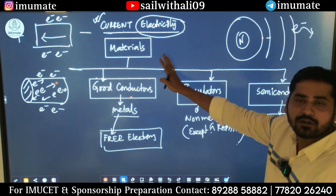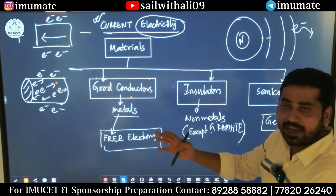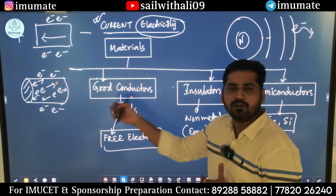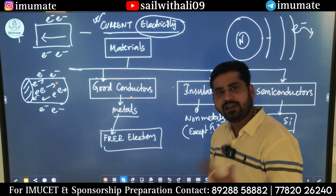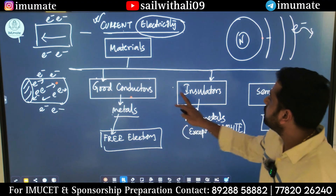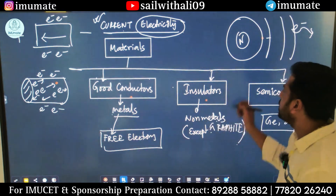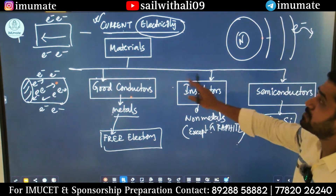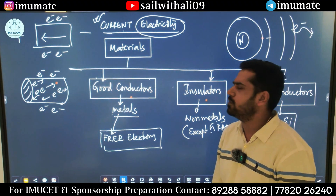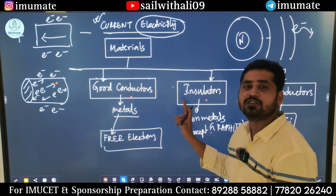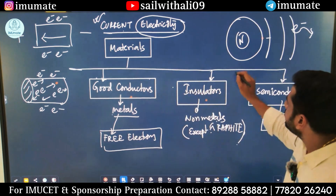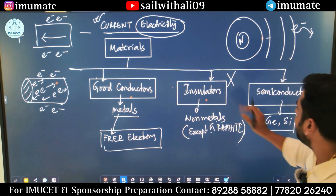Now metals are good conductors — they have free electrons in them, so they are able to conduct electricity in a particular direction whenever we apply a potential difference. But insulators do not have that many free electrons. Though at certain temperatures some amount of electrons will always be there, they are not sufficient to conduct electricity in a proper direction. So insulators will not conduct electricity.